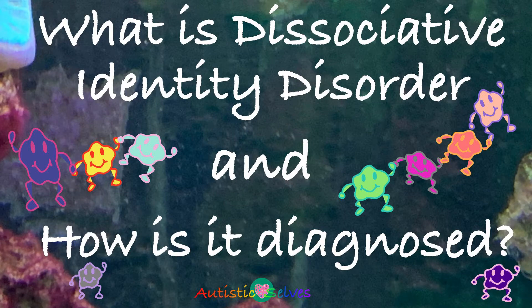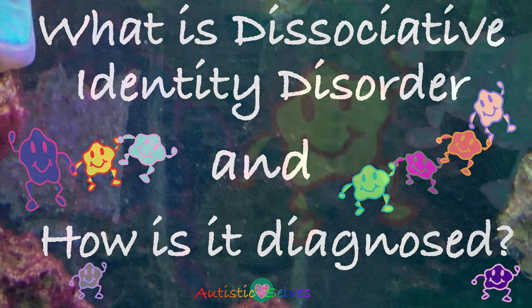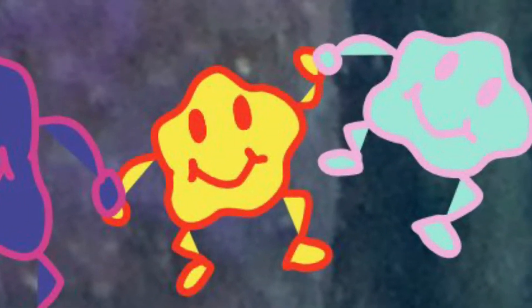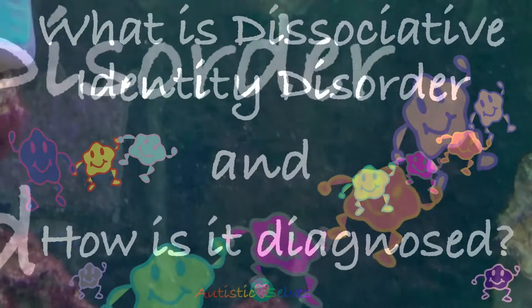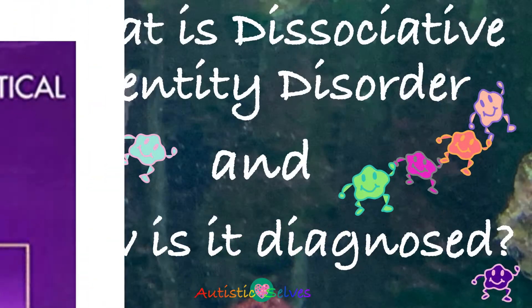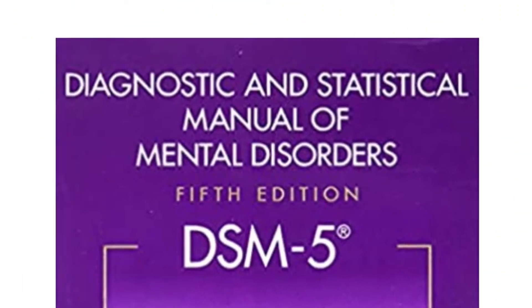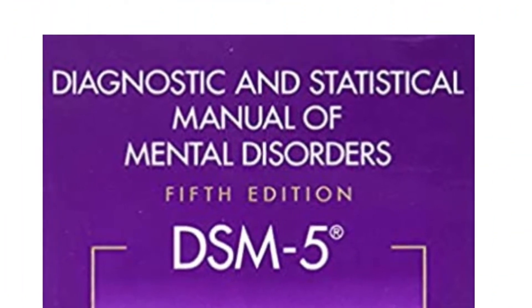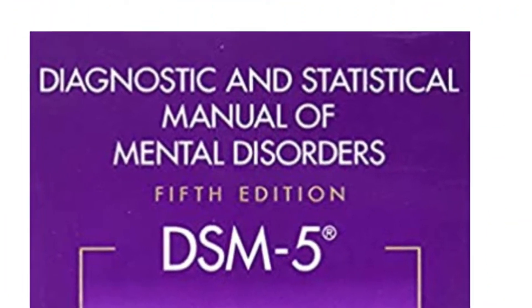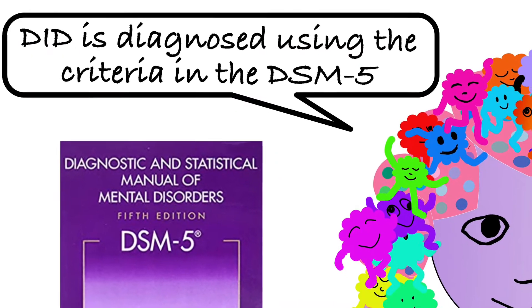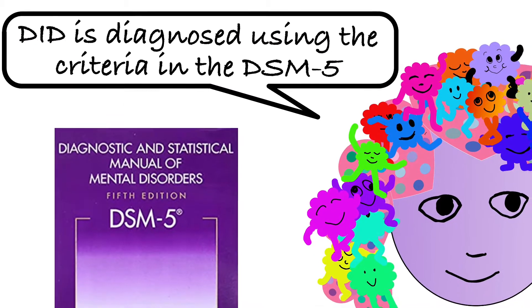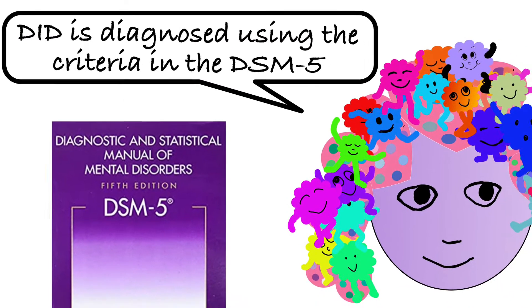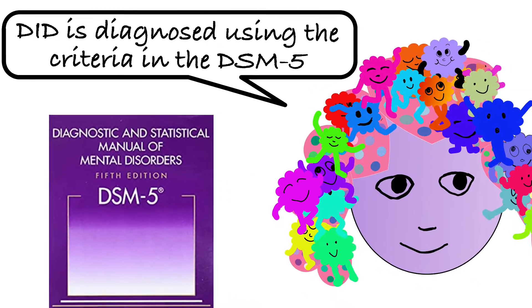Hello and welcome to this Autistic Salves video which will explain what Dissociative Identity Disorder is and how it is diagnosed. We will be describing the DSM-5 criteria which are the criteria currently used to diagnose Dissociative Identity Disorder.